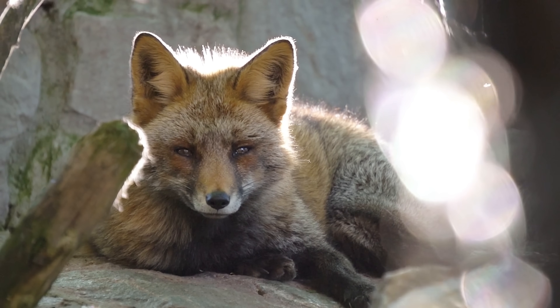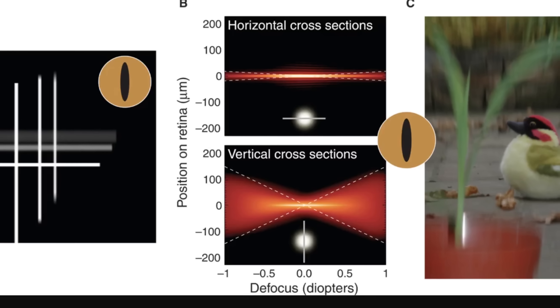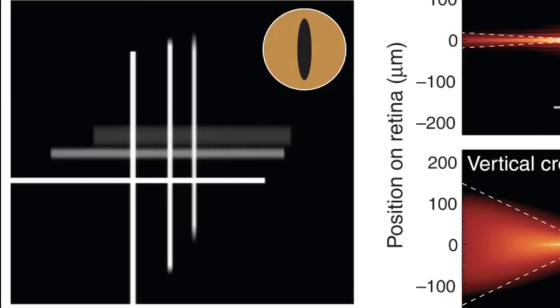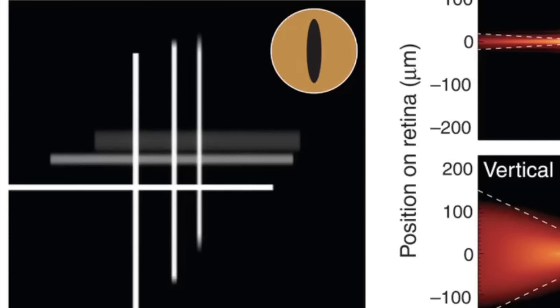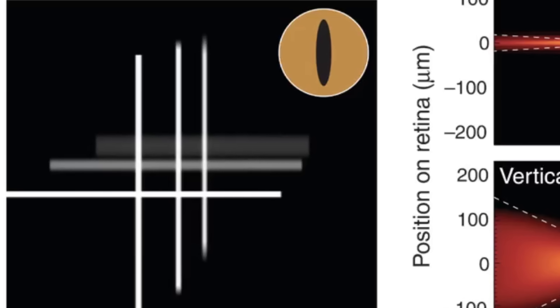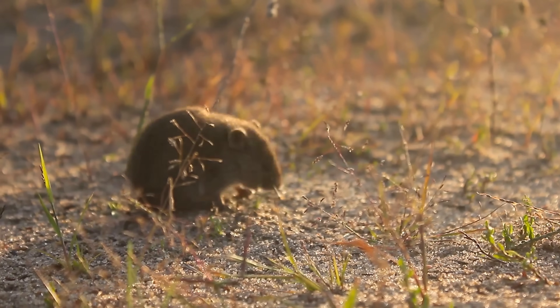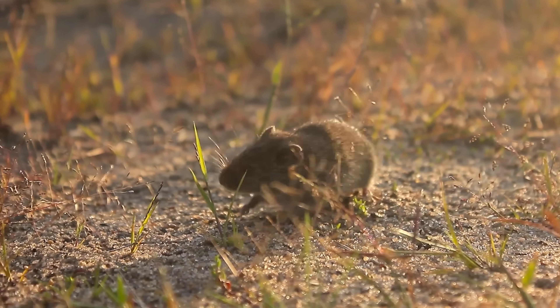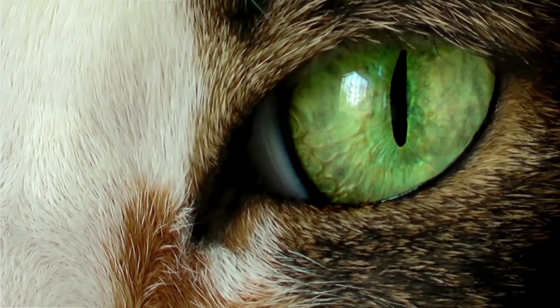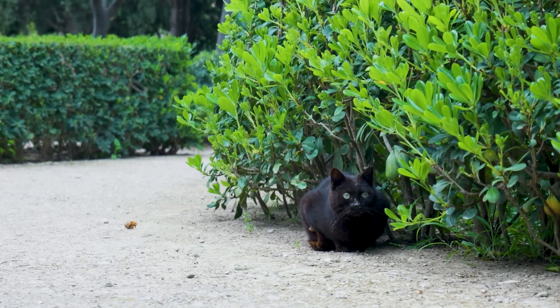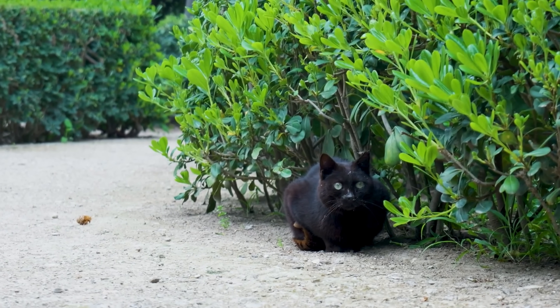Vertical slits create what's known as a stigmatic depth of field, visualized in this image. In simpler terms, it allows for incredibly precise distance judgment, especially when it comes to vertical contours, which is important for animals that tend to chase prey. Imagine a mouse moving fast and a cat hiding trying to catch it — a vertical pupil helps pinpoint the exact location and distance even if the cat does not move its head. It's almost like having a laser rangefinder for hunting.